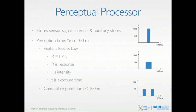This is explained in Bloch's Law, where the response that a person gets is the product of the intensity of the signal — so how many photons are coming at them — and the exposure time. Furthermore, the response is the same if the exposure time is below 100 milliseconds.